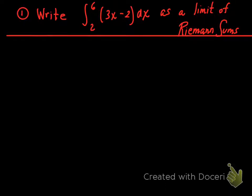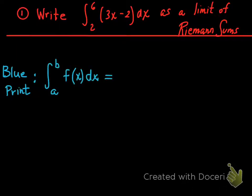We're going to be given a definite integral from 2 to 6 of function 3x minus 2 dx and be challenged to write this as a limit of Riemann sums. So first of all, I want you to be familiar with the blueprint for the limit of the sum of Riemann sums. There's your definite integral from a to b of f of x dx. We're familiar with that and we know how to evaluate integrals of that form.